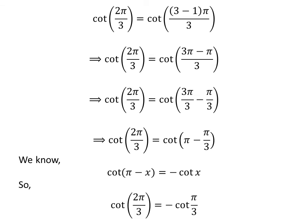Application of the above identity gives us cotangent of 2 times pi upon 3 is equal to minus cotangent of pi upon 3.